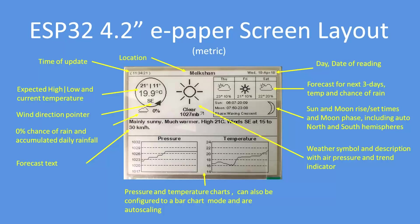In terms of the display, it's very similar to the 2.9 inch version: the time of update, the location, date and time of the reading, the expected high and low and current temperatures. The wind direction is coming from the southeast. Probability of rain on that chart is depicted as 0, along with a weather description and a weather symbol.